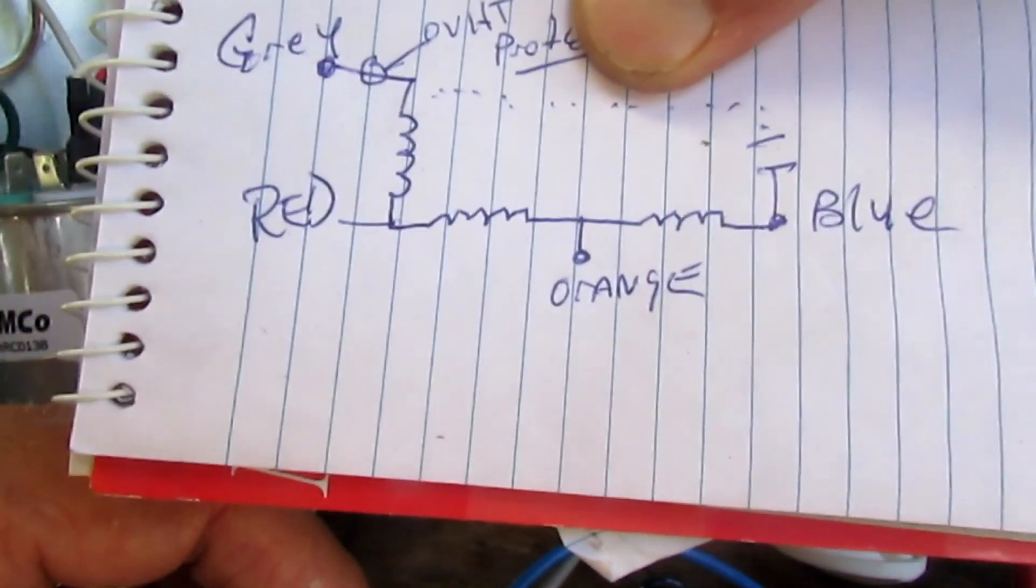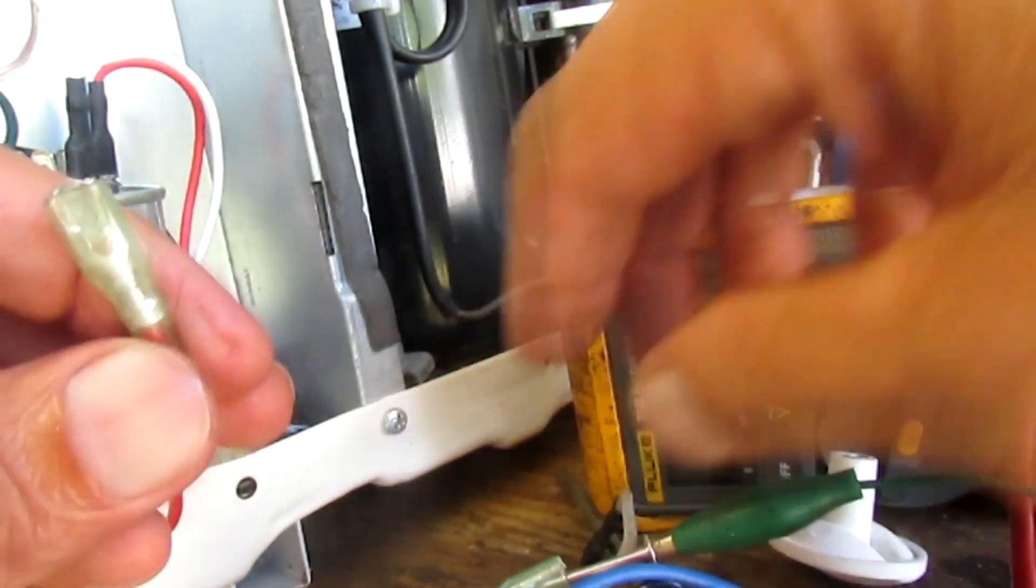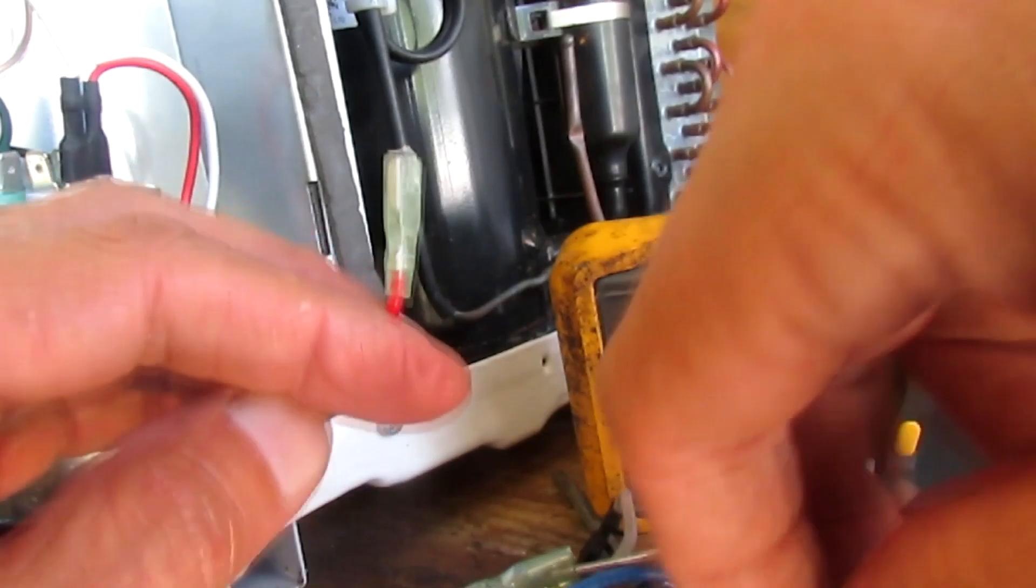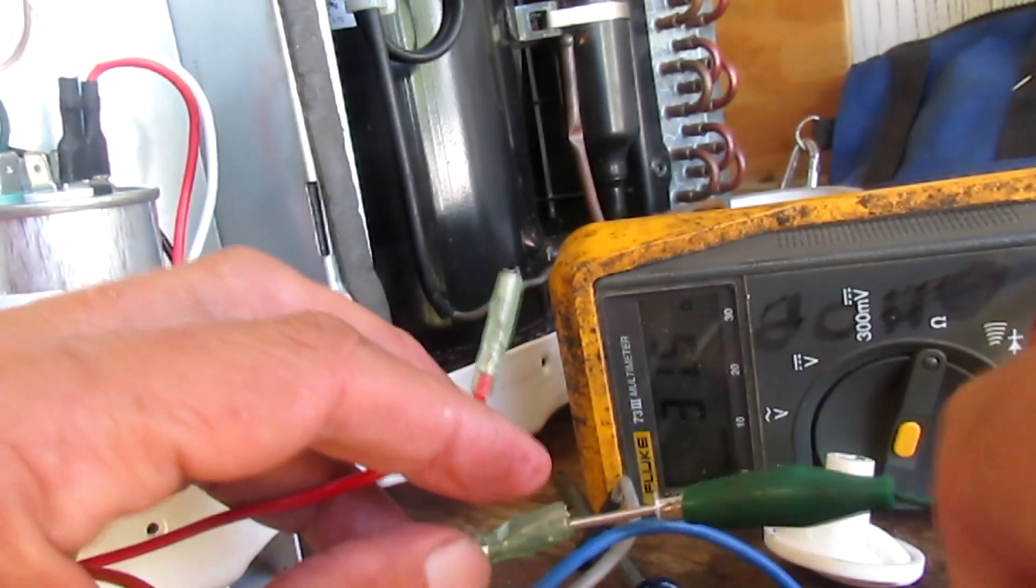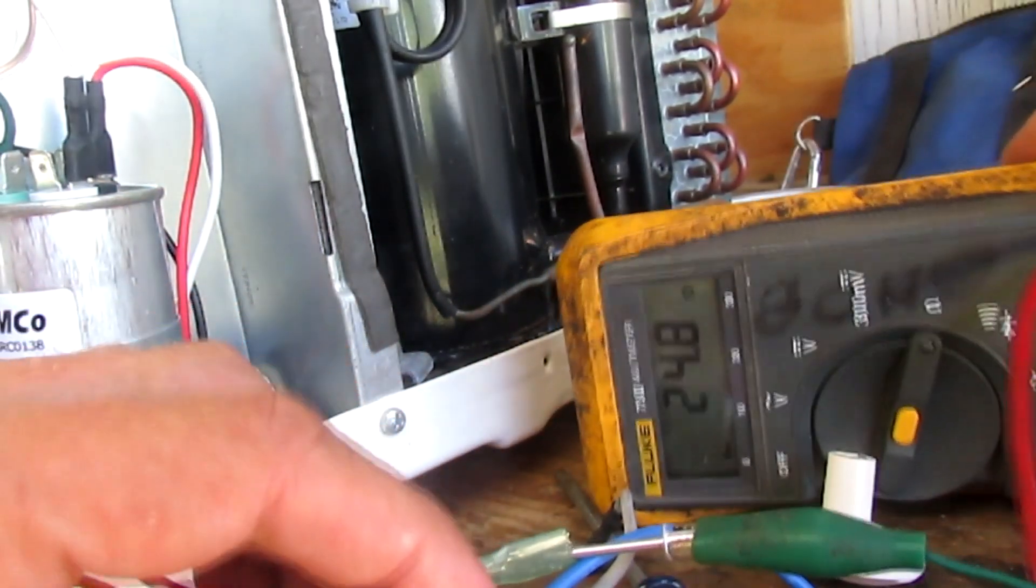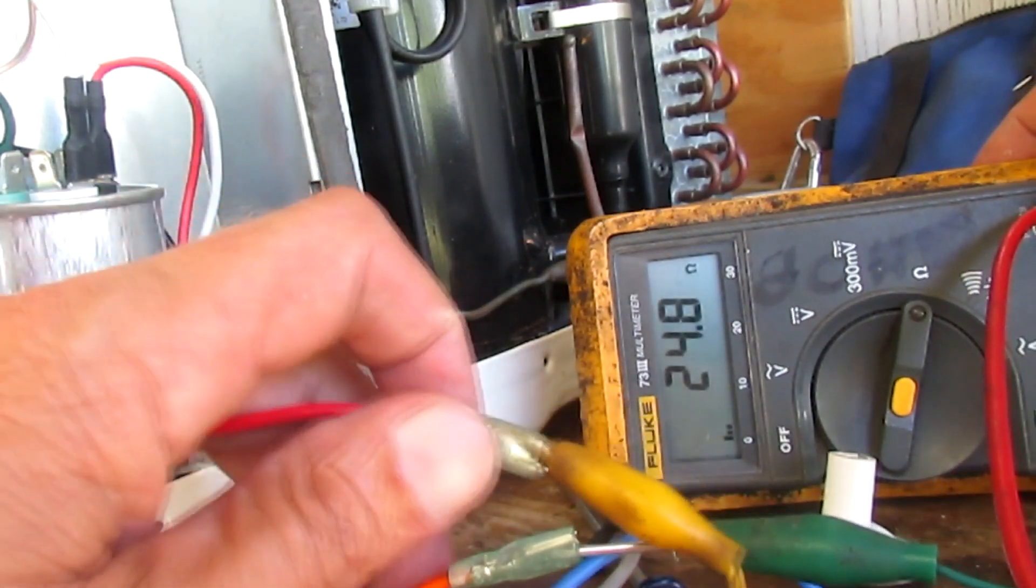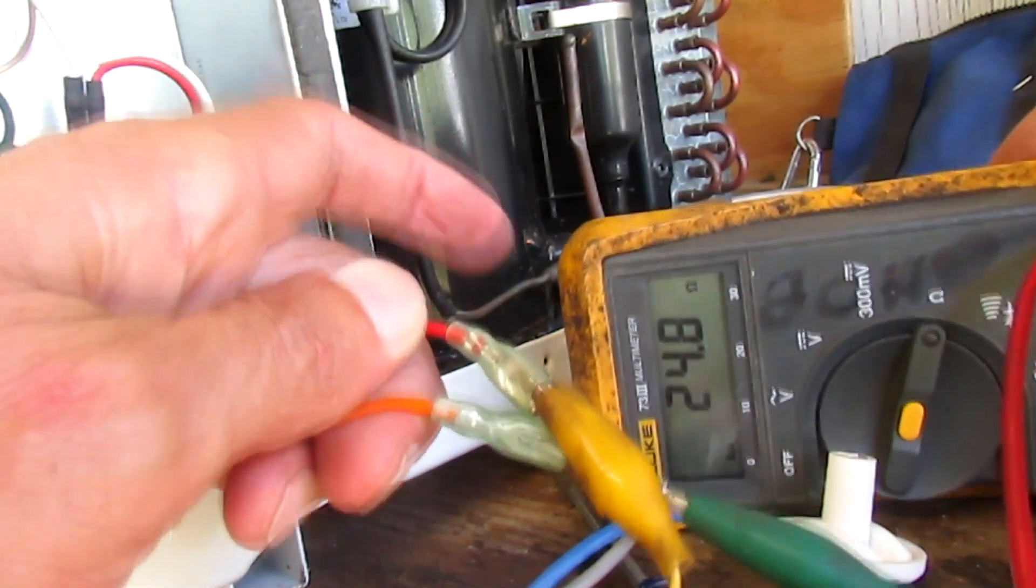And now I'm going to go from the orange to the red to make sure that wire is good. I don't know if that's the right reading for this motor, but I know it's not shorted out and I know it's not open. So I'll leave my meter lead in the orange and I'll clip this one onto the red. And what do I read? 24.8. I know it's not open and I know it's not shorted, so I'm going to assume that's probably good.